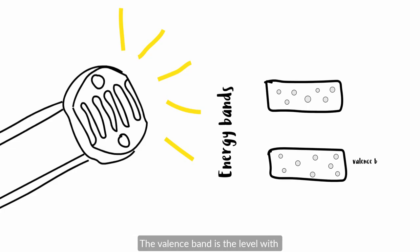The valence band is the level with the lowest energy, where electrons move the least freely. The conduction band has the highest energy, and allows for the free movement of electricity. These bands are separated by an area called the energy gap.